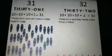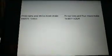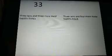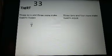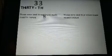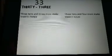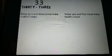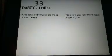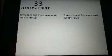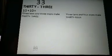Now please count the number of snails in the picture. 3 and 3 makes the number 33. T-H-I-R-T-Y T-H-R-E-E, 33. Please repeat after me: T-H-I-R-T-Y T-H-R-E-E, 33. The number 33 comes just after the number 32. 3 tens and 3 more make 33.